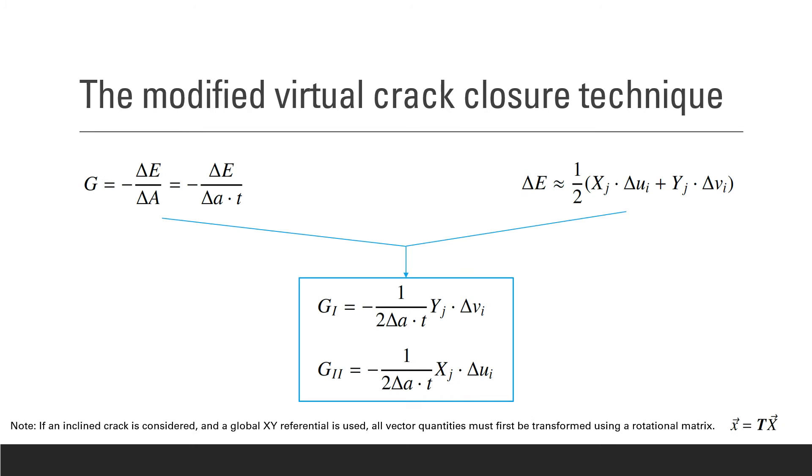Now we can combine the previous two presented equations, and we can obtain these relationships to obtain the strain energy release rate for mode 1 and mode 2. Also note that if an inclined crack is considered, a global capital X and Y referential should be used, and all vector quantities must first be transformed using a rotational matrix. So these equations are only valid for a referential that is aligned with the crack.